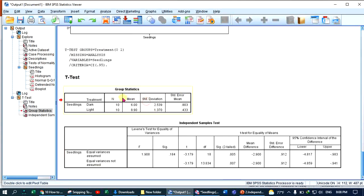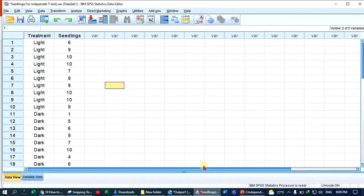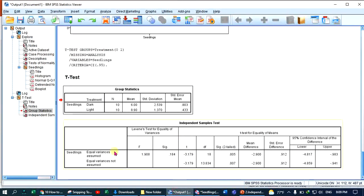Looking at the output, this is the assumption of homogeneity of variance. The p-value for Levene's test is greater than 0.05, so we fail to reject our null hypothesis, meaning the variance of the groups are not significantly different.